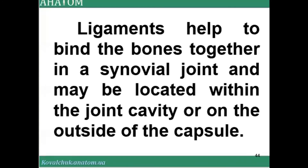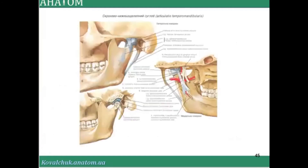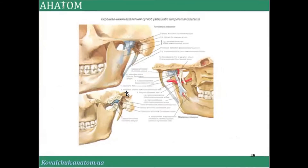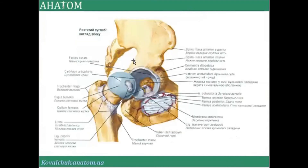Ligaments help to bind bones together in a synovial joint and may be located within the joint cavity or on the outside of the capsule. Some ligaments are found not near but within certain joints — these are interesting ligaments located inside the capsule. One example is the ligament of the head of the femur.